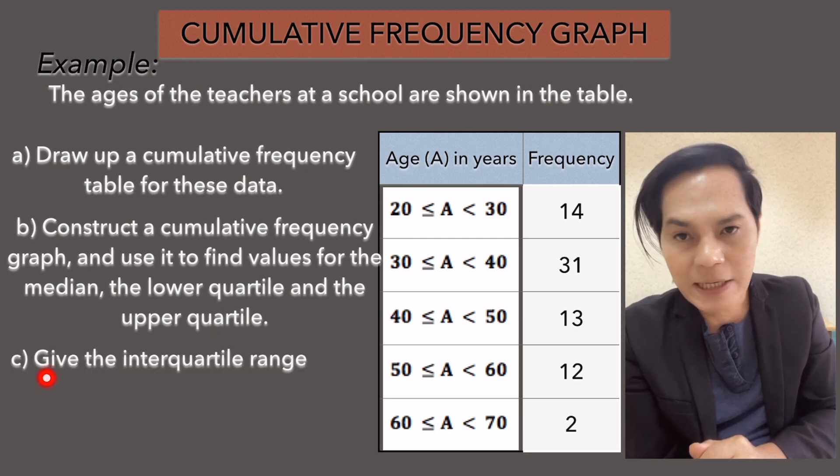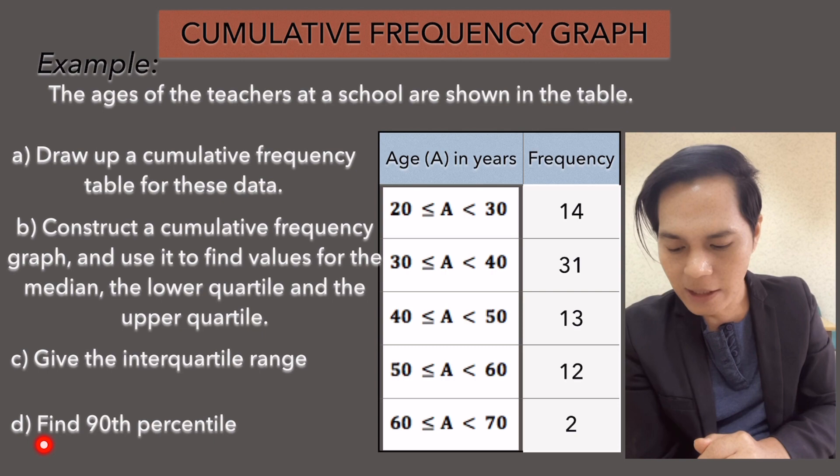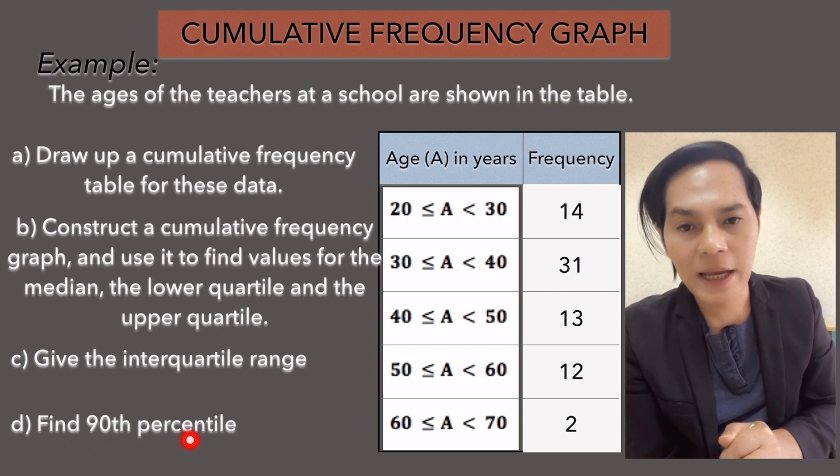And letter C, give the interquartile range. And last but not the least, find the 90th percentile.